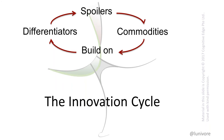You can think of many places where this innovation cycle has come about — from computers to cars. All technology starts with a differentiating cycle and eventually becomes commoditized, and then people can build on it.